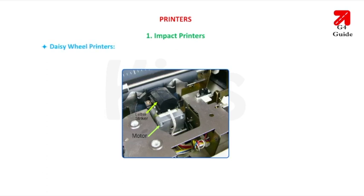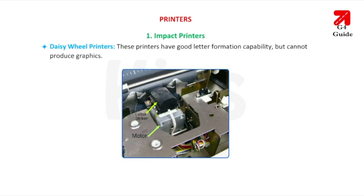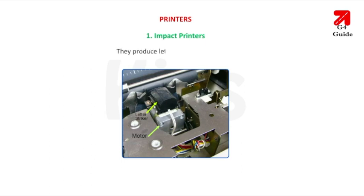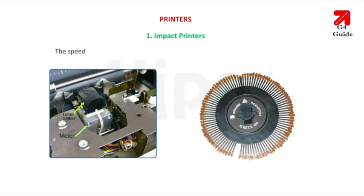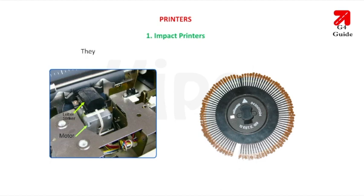Daisy wheel printers have good letter formation capability but cannot produce graphics. They produce letter quality documents. The speed of these printers varies from 60 cps to 120 cps (characters per second). They are not in use anymore since they are very slow and noisy.